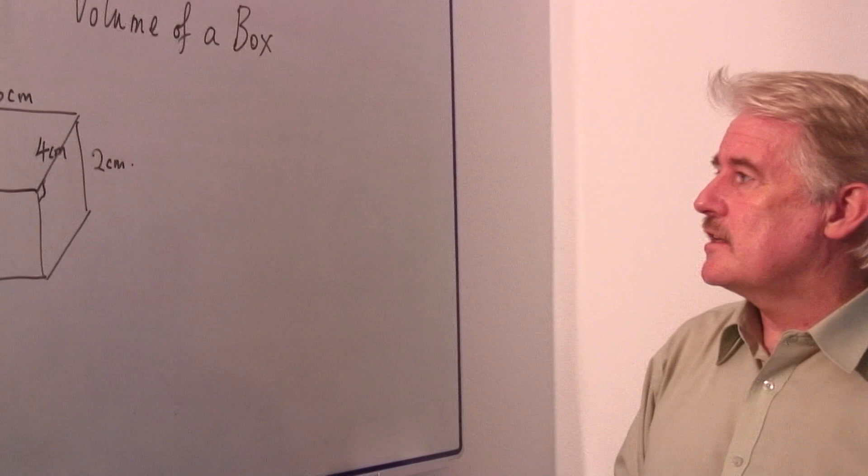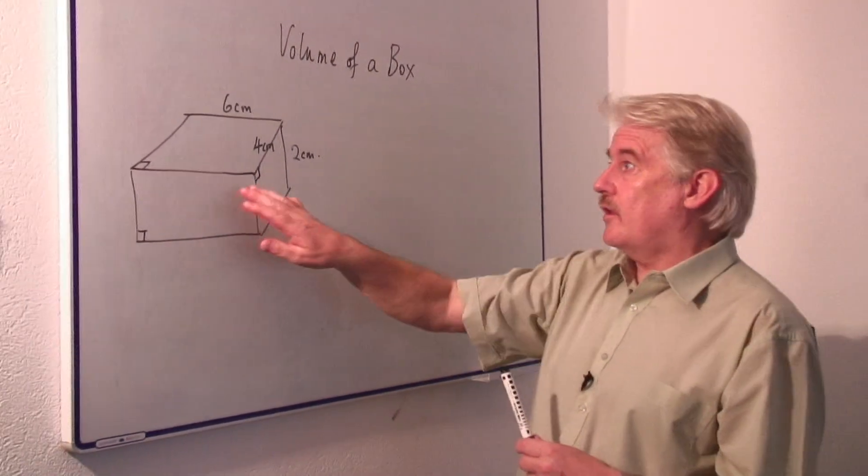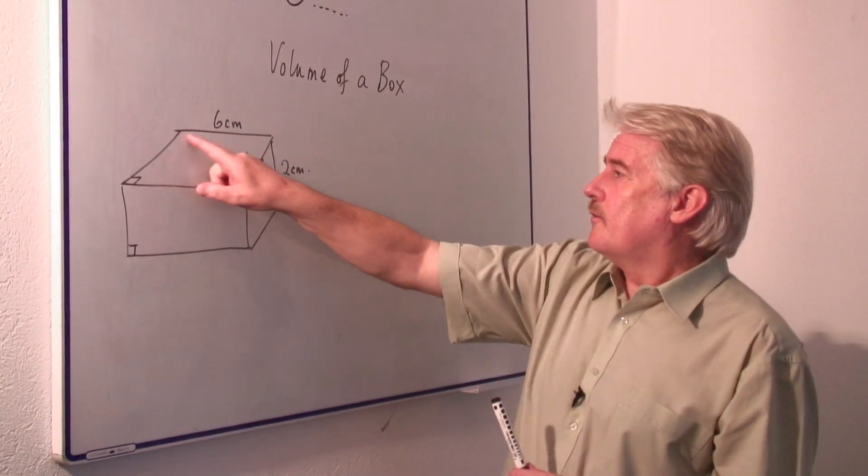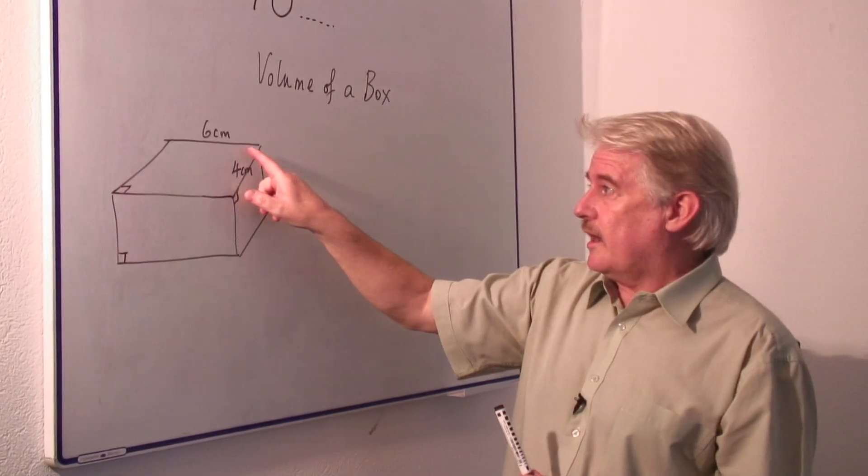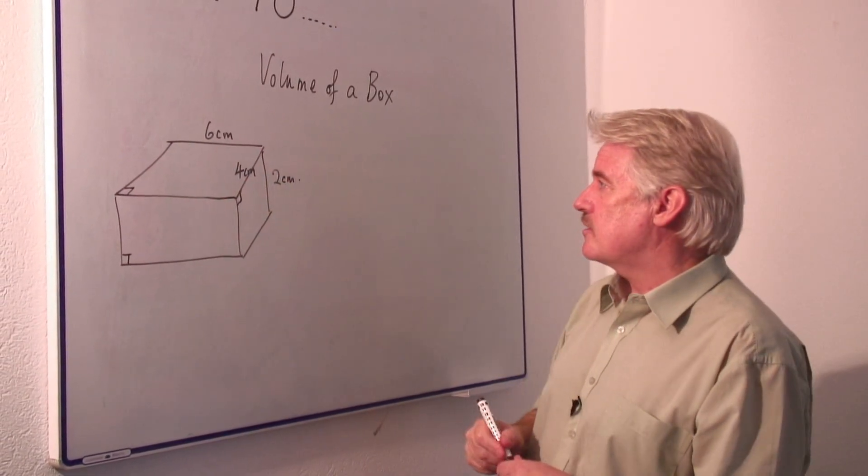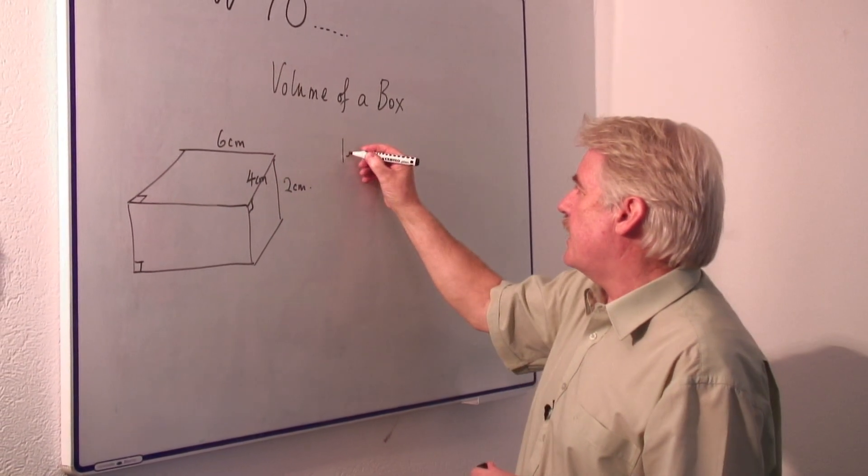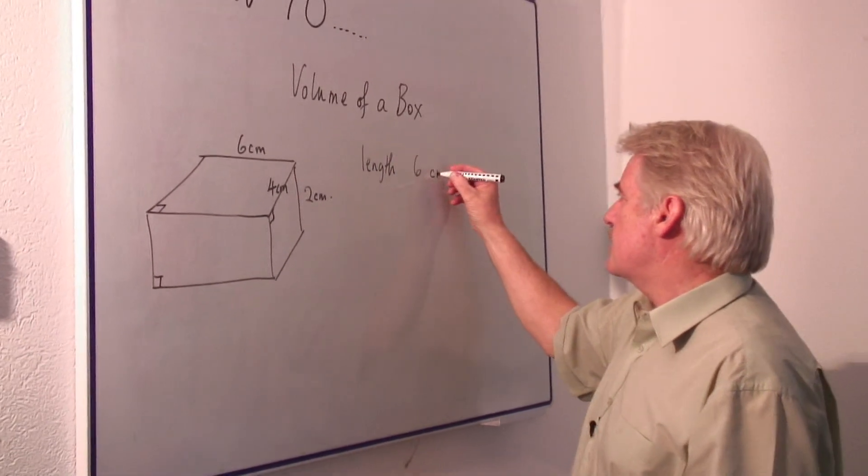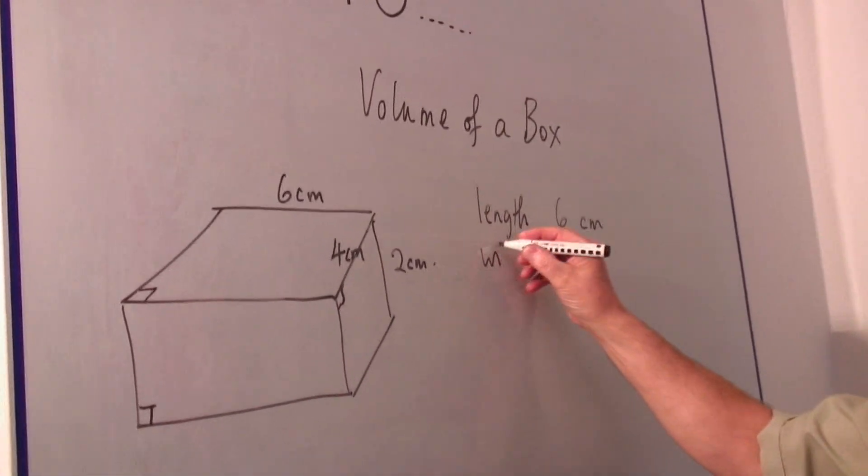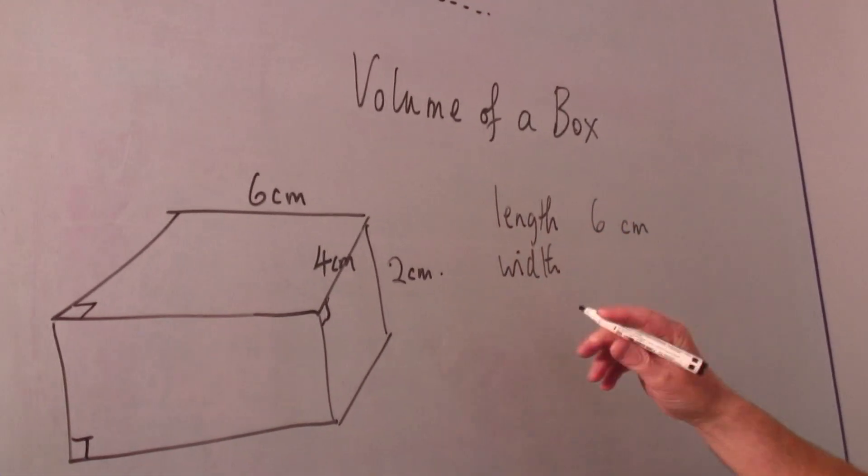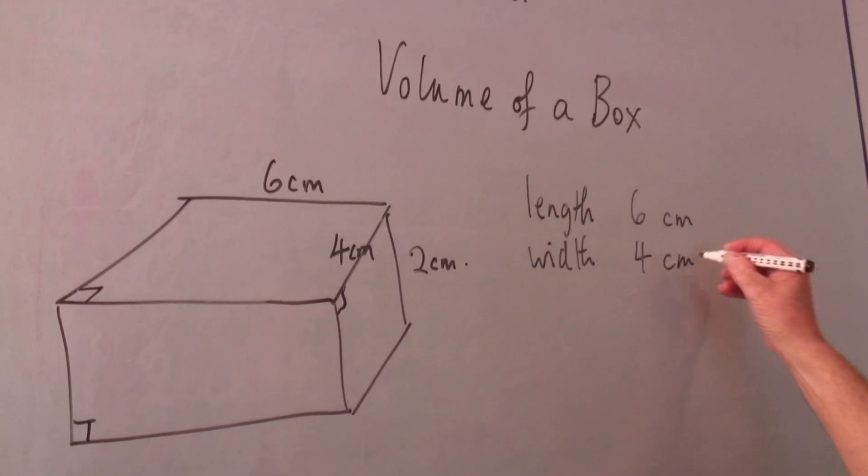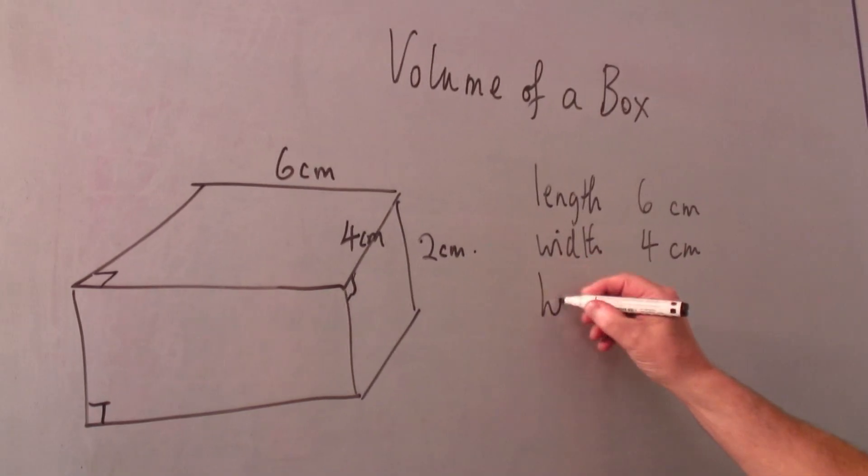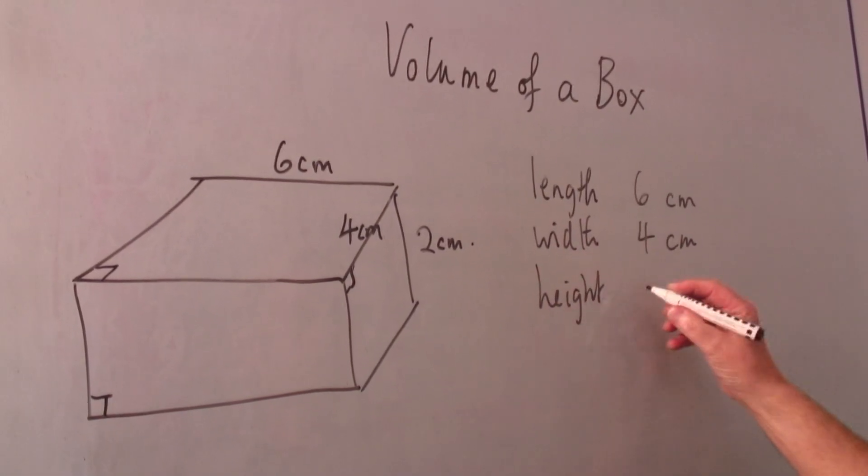So to calculate the volume of this object, first of all, we have three different dimensions and we generally call them the length, and the length we know is six centimeters. The width is four centimeters and the height is two centimeters.